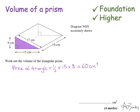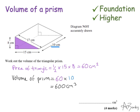That gives us 60 centimetres squared, because this is just an area at this point. Now to find the volume of the shape, I multiply my answer by how far back this shape goes — what is its depth, or its height, or its length. In this question it's this 10 centimetres here. So the volume of the prism is 60, which is the area of the cross-section, multiplied by its depth, which is 10.